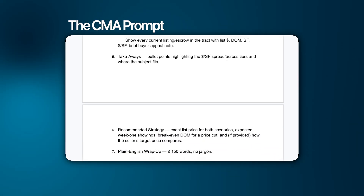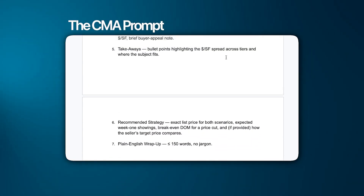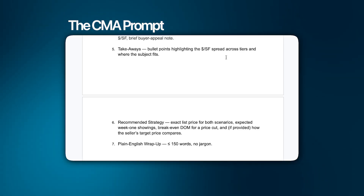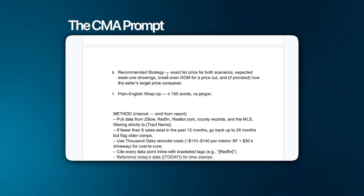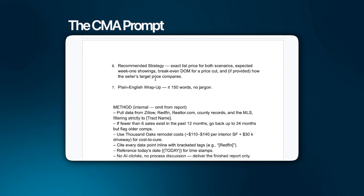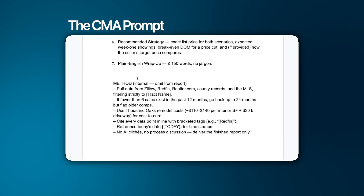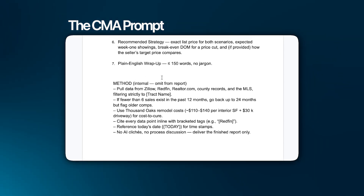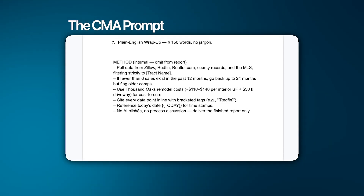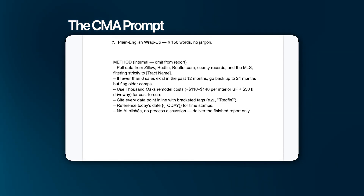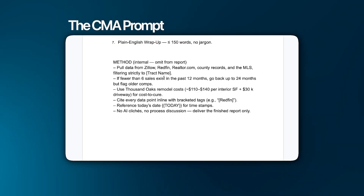It will give me address, close date, dollar amount sold, square footage price, and condition — which is important because it puts them all together so I can review accuracy. It'll also give me active and pending listings, bullet-point highlights of price-per-square-foot spread across tiers, a recommended strategy section where I tweaked things based on my knowledge, and a plain-English wrap-up. The method section is internal — omitted from the report — and describes how data is gathered.